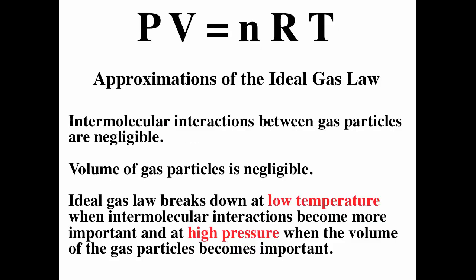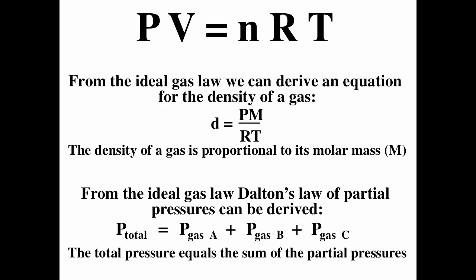In summary: ideal gas law PV = NRT assumes intermolecular forces and particle volume are negligible. It works best at higher temperatures and lower pressures, and breaks down at low temperatures and high pressures. We can extend it to get the density equation D = PM/RT, and to derive Dalton's law of partial pressures, where total pressure equals the sum of partial pressures. Partial pressures are especially important when discussing equilibrium and equilibrium reactions.